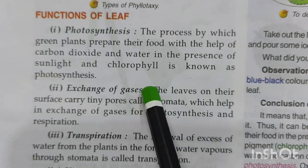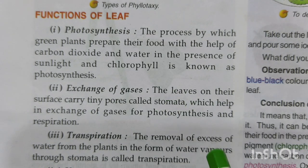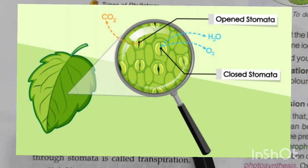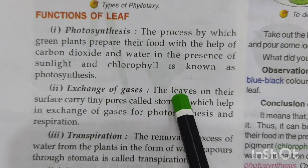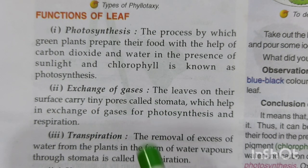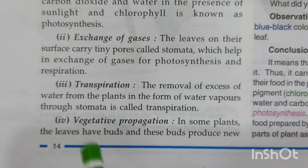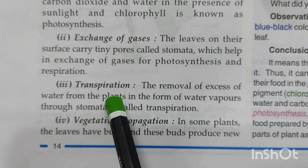The next function is the exchange of gases. Plants take in carbon dioxide and give out oxygen — this exchange of gases takes place through the leaves. The leaf surface carries tiny holes known as stomata; innumerable stomata are present, with more on the underside of the leaf than on the upper side. Stomata help in the exchange of gases used for photosynthesis as well as respiration.